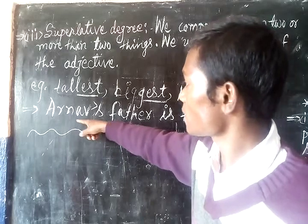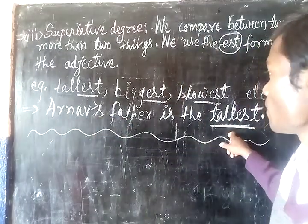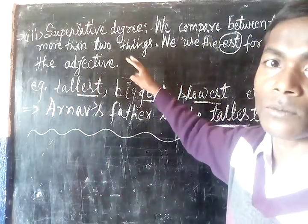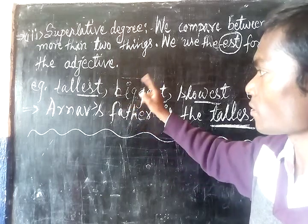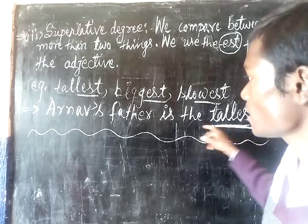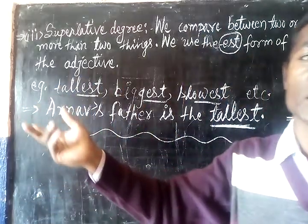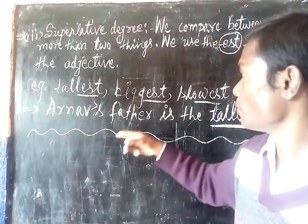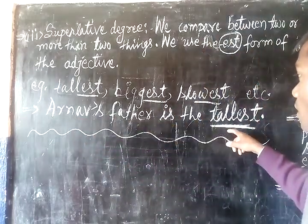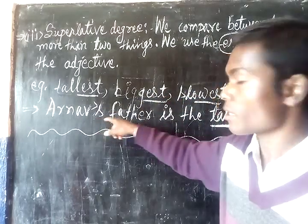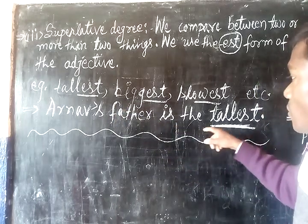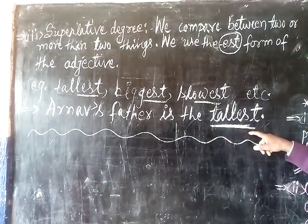Let us see an example in a sentence. 'Anas's father is the tallest.' Here comparison is between two or more than two persons — in Anas's family there may be many people, but Anas's father is the tallest one. And 'Anas's father is taller than mother' — taller is comparative degree — but 'tallest' is the superlative degree. Did you understand?